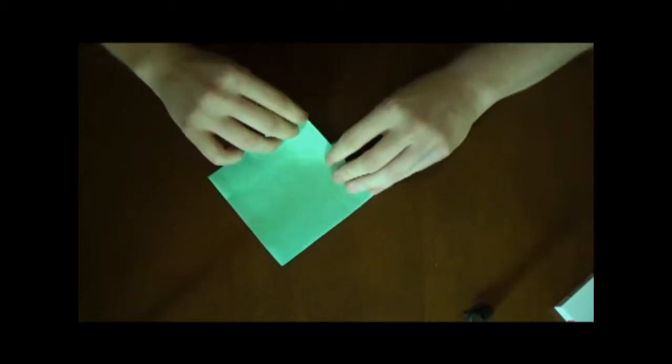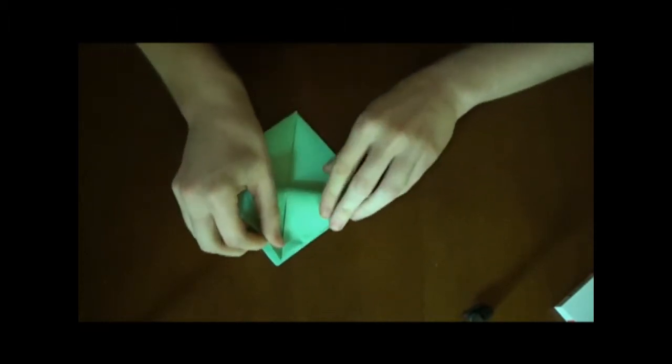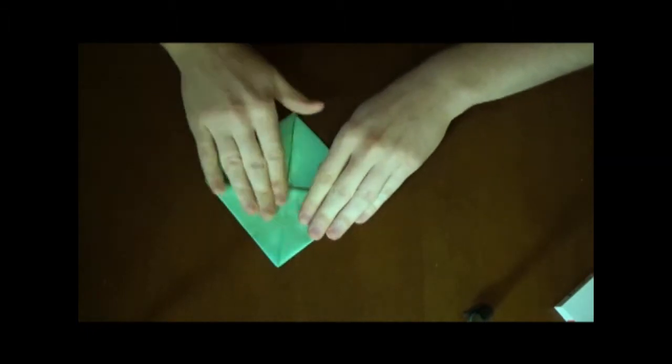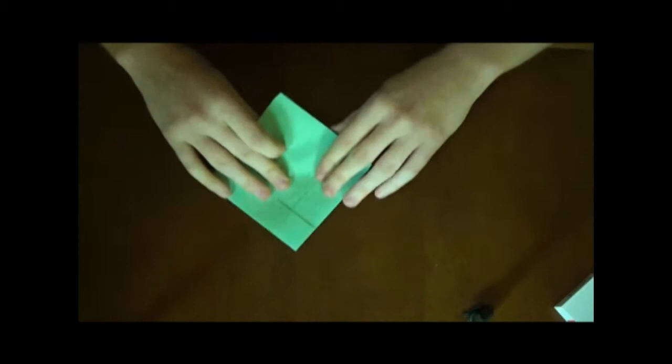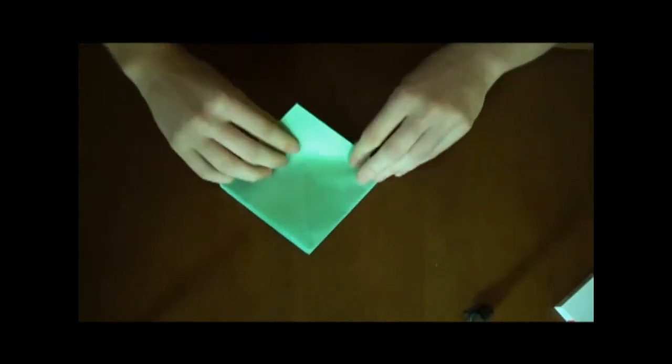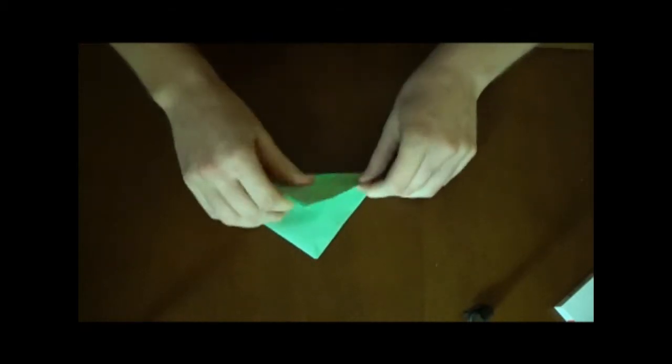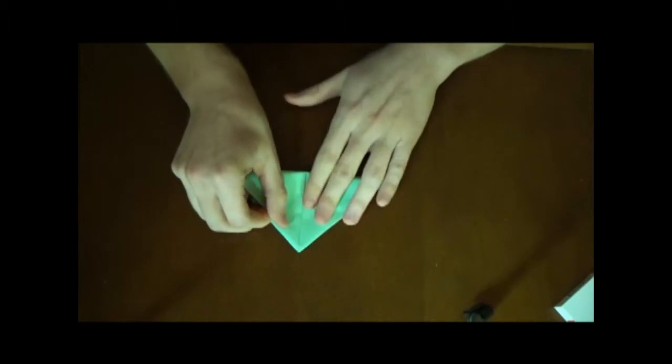Alright, then you want to go ahead and just make sure everything's all folded out nicely. And then you want to take this corner here and fold it up to this corner like so. And then I guess you guys know what's coming, right? You got to keep it symmetrical. So you flip it over, do the same thing. This corner to here like so.